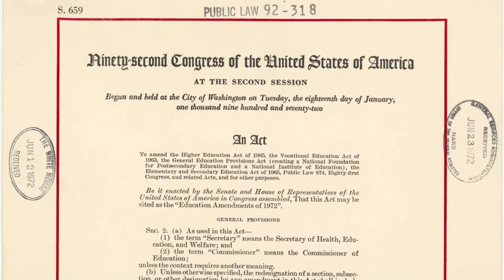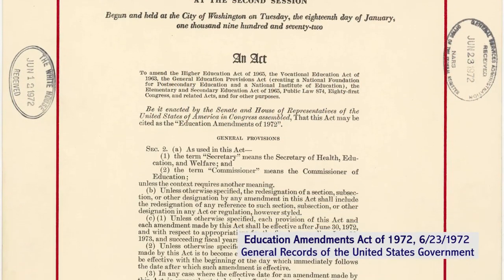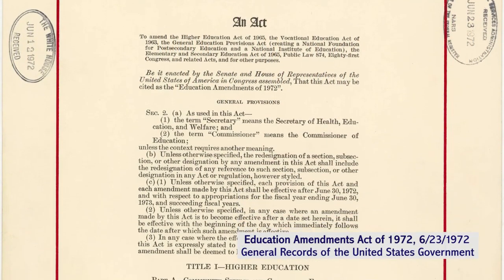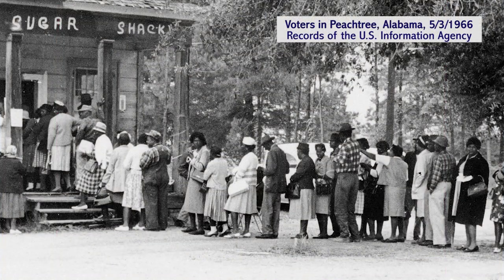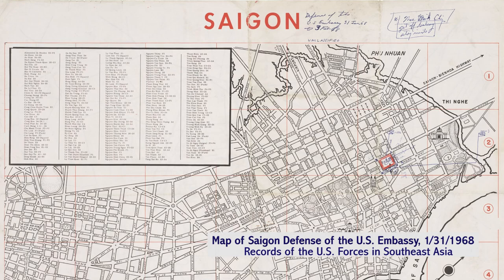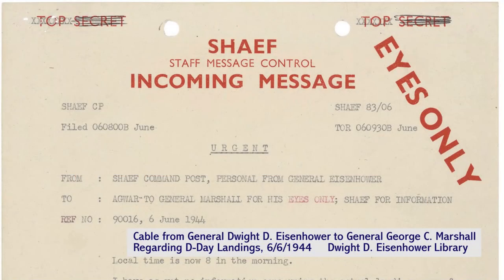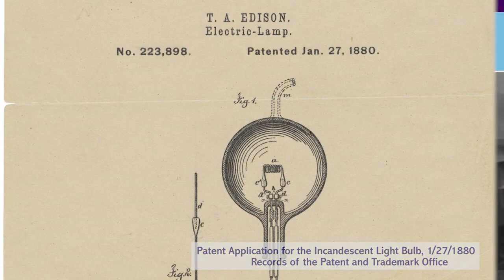The holdings of the National Archives include over 16 billion textual documents, photographs, audio and video recordings, maps, and more. You can explore these records through the numerous online resources available for students and teachers.